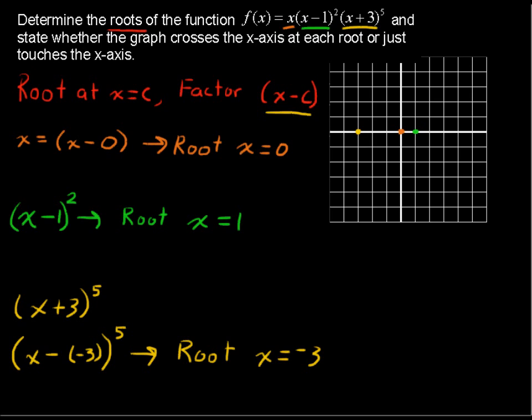Well, if you have an exponent of 1 or 3 or 5 or 7, an odd exponent on the factor, then we call that odd multiplicity. If you have odd multiplicity, we're going to say that the graph crosses the x-axis. So I'm just going to write a note to ourselves, cross.